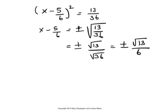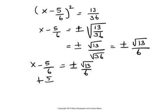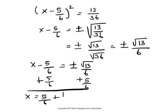Now we will isolate x by adding 5 sixths to both sides of the equation. So we will, let me write the equation here, and add 5 sixths to both sides. That gives me x is equal to 5 sixths added to plus or minus root 13 divided by 6.